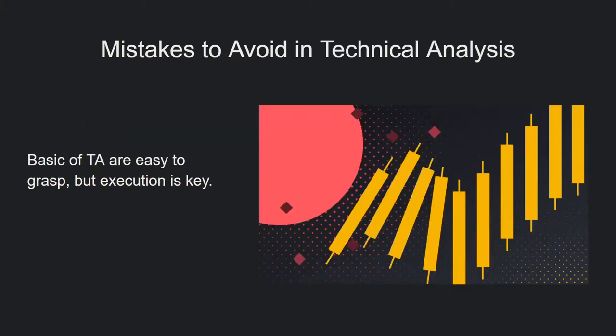I'm going to be talking about trading mistakes. The basics of technical analysis are actually relatively easy to grasp. You have to put in the time, but if you do, you'll get a solid framework for analyzing financial markets. We do have a lot of beginner-focused trading content on Binance Academy, so check that out. Execution is a completely different domain than analysis. When you're starting out, you'll likely make a lot of mistakes, and if you're not careful, you can really quickly blow up your account. You can learn from those mistakes, but we're going to talk about the most obvious ones you can try to avoid.